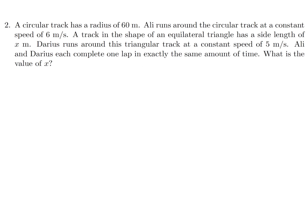A circular track has a radius of 60 meters. Ali runs around the circular track at a constant speed of 6 meters per second. A track in the shape of an equilateral triangle has a side length of x meters. Darius runs around this triangular track at a constant speed of 5 meters per second. Ali and Darius each complete one lap in exactly the same amount of time. What is the value of x?